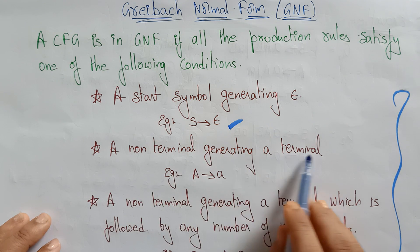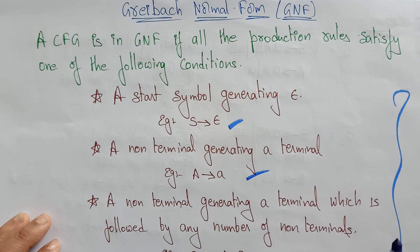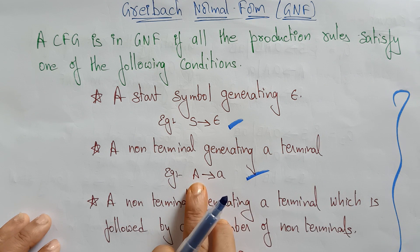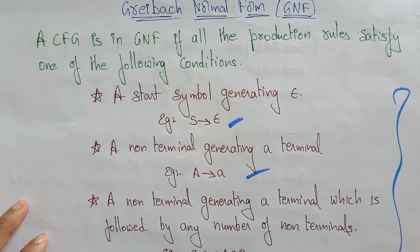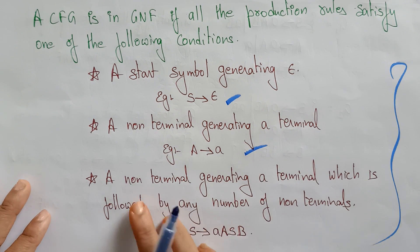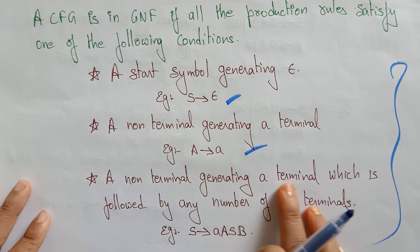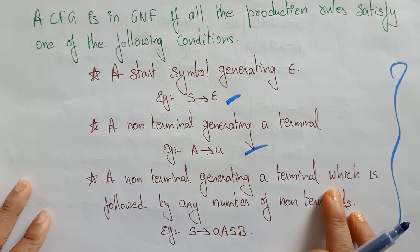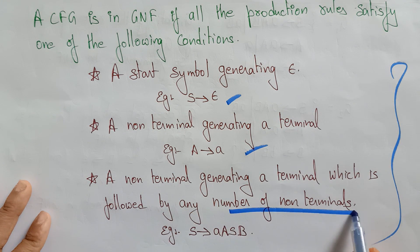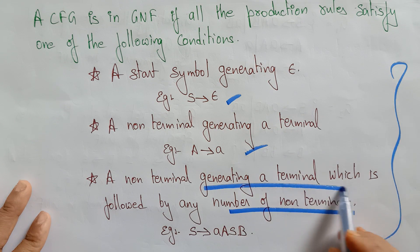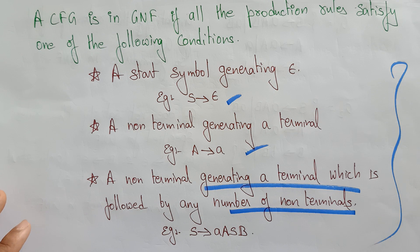The second condition is: a non-terminal generating a terminal. The third condition is: a non-terminal generating a terminal which is followed by any number of non-terminals. This third condition is the main difference between Chomsky Normal Form and Greibach Normal Form.